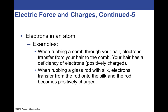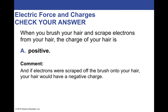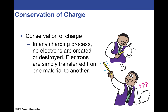Static electricity: if you comb your hair and some electrons are stripped off and left on the comb, the comb ends up with a negative charge and your hair is left with a positive charge. Conservation of charge: if you start with something that has zero charge and make it negatively charged, the other object must pick up a positive charge. This law is never broken — the total charge of an isolated system is always conserved.